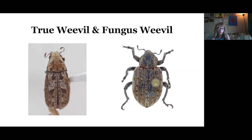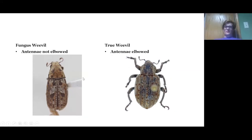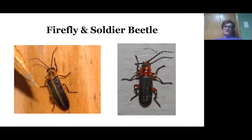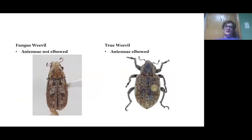The true weevil is the thin one and the fungus weevil is the almost bark-like one. The fungus weevil is on the left and the true weevil is on the right. True weevils will have elbowed antennae, while fungus weevils will have straight antennae with no elbow. Fungus weevils are actually a completely different family from true weevils, and a lot of them feed on fungi — that's why they're called fungus weevils.